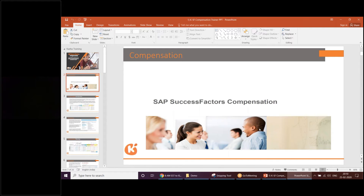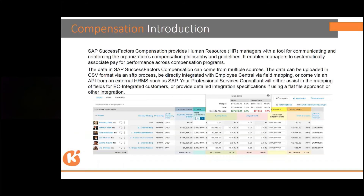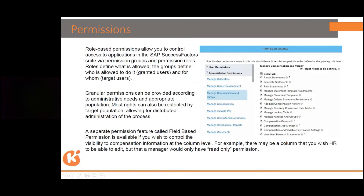These are the topics we're going to cover during compensation. You can see the compensation introduction — employee names, their current salary, merit section, budget allocation, rating, promotion, and final salary. Then there is a permissions section — everything you do in the system requires certain permissions, whether you have access to do certain things or not.